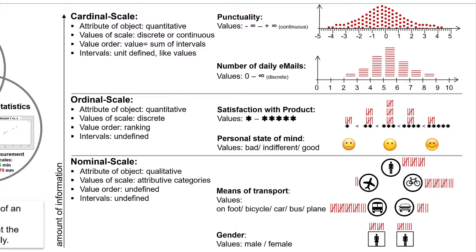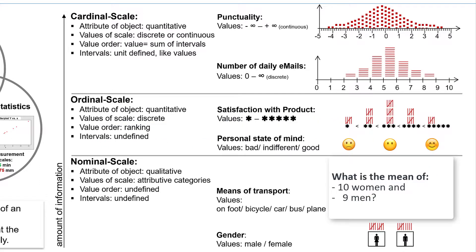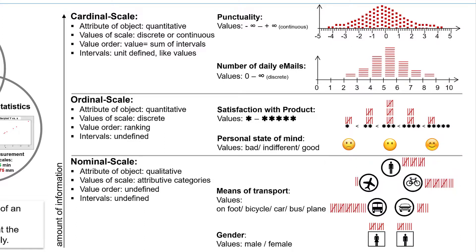But which graphics are suitable and which parameters may we calculate? The most important statistical parameters indicate the central tendency of a sample, like the mean value, and its dispersion, such as the standard deviation. But what is the average of 10 women and 9 men? 9.5 men, women? Nonsense! That doesn't work. And the visualization in a histogram doesn't work either.